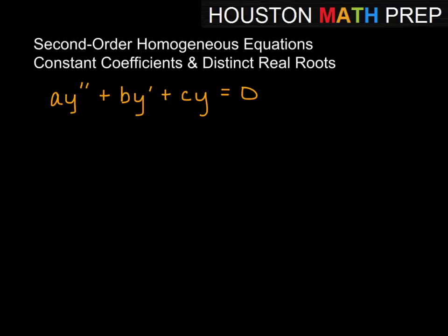So here we have ay'' + by' + cy = 0. Homogeneous, second-order, a, b, and c are constants.